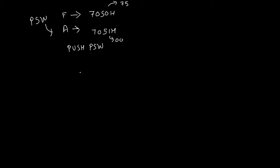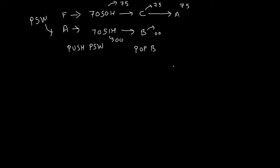The accumulator was 00, since we have not taken any value inside it. In the next step, we will transfer this content into one of the registers — let's say inside the BC register pair — by writing the instruction POP B. From memory, it will get copied into BC, so C will become 75 and B will become 00. Then we will take the value of C inside the accumulator using MOV A, C, so the accumulator will become 75.